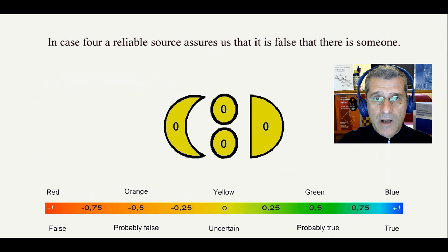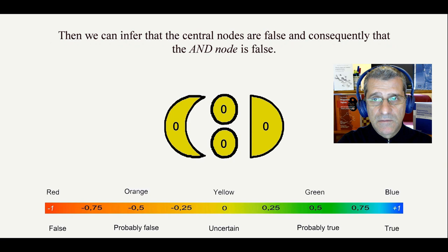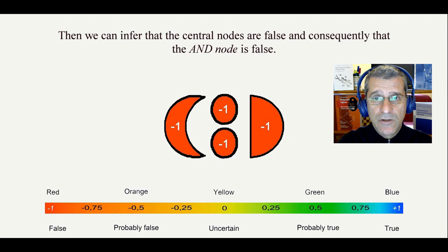In case 4, a reliable source assures us that it is false that there is someone. Then, we can infer that the central nodes are false and consequently that the AND node is false.